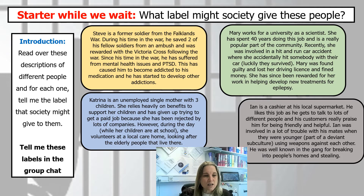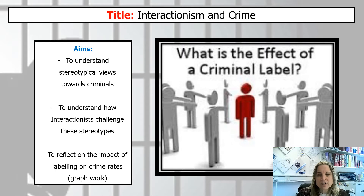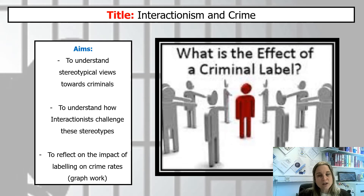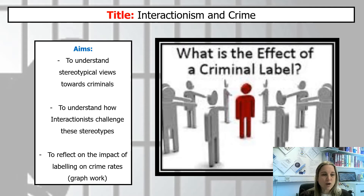So have a look at those four individuals and jot down the labels that you think society would give them. Press pause and do that now. The title for today is Interactionalism and Crime. Whenever we're talking about interactionalism we're essentially talking about labeling. What we are looking at today is the impact of labeling on crime — how being labeled affects a person, affects a criminal potentially re-offending and staying in the pattern of criminal behavior, and also stereotypical views towards criminals.